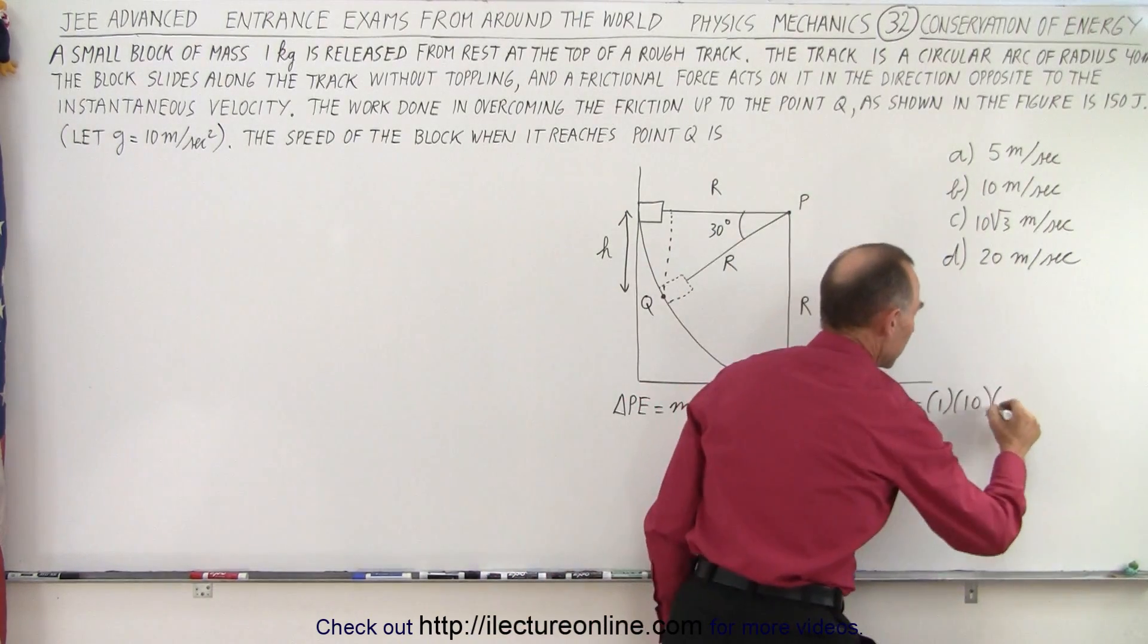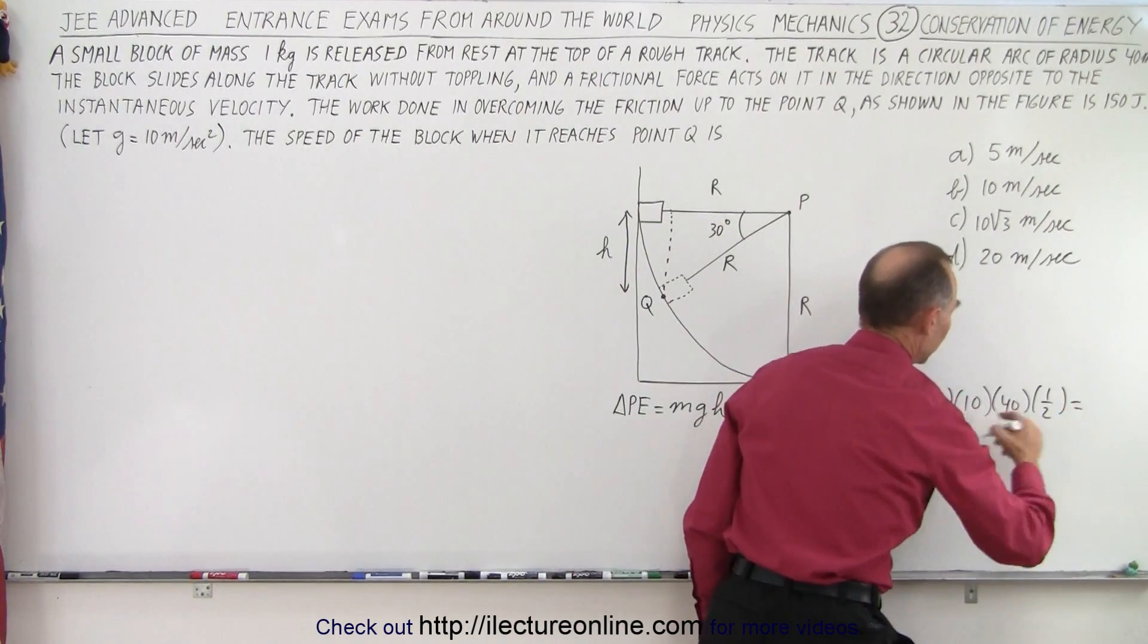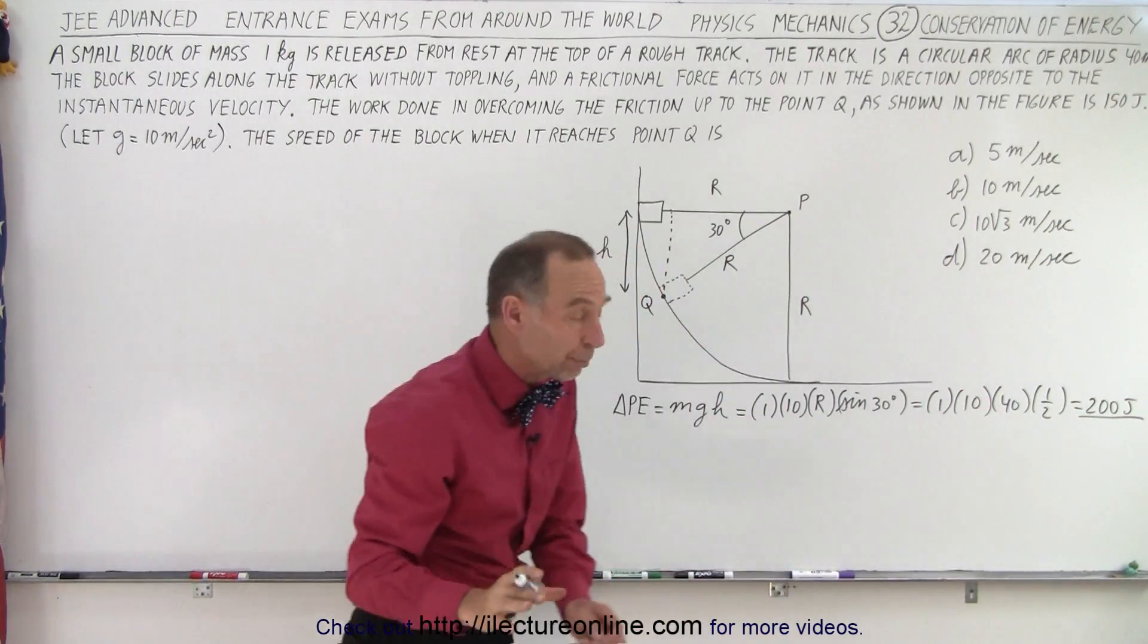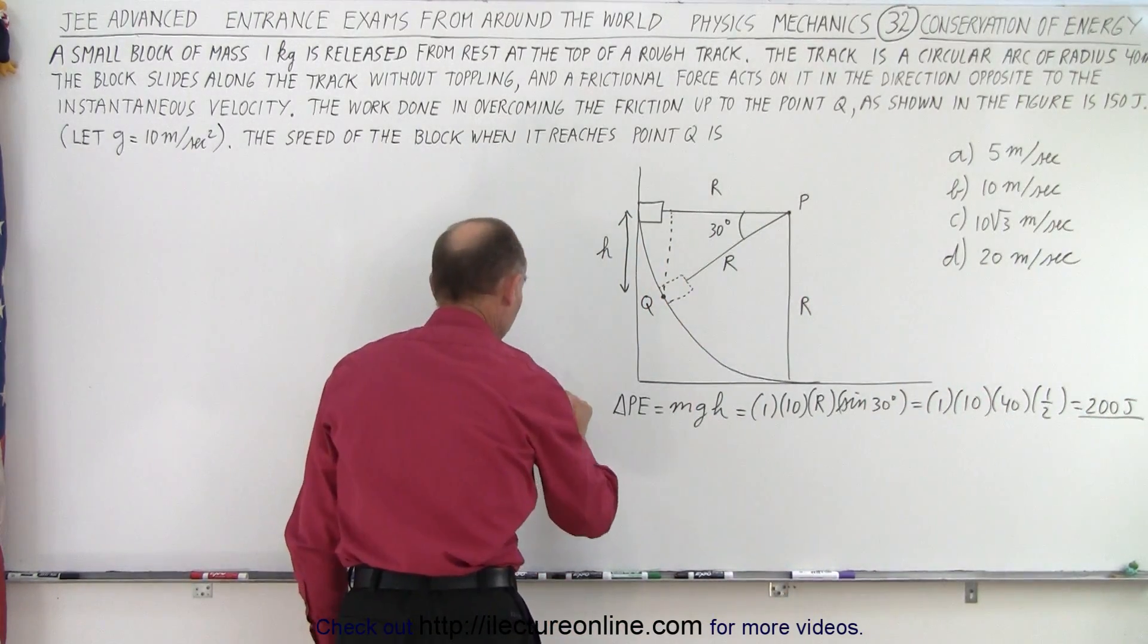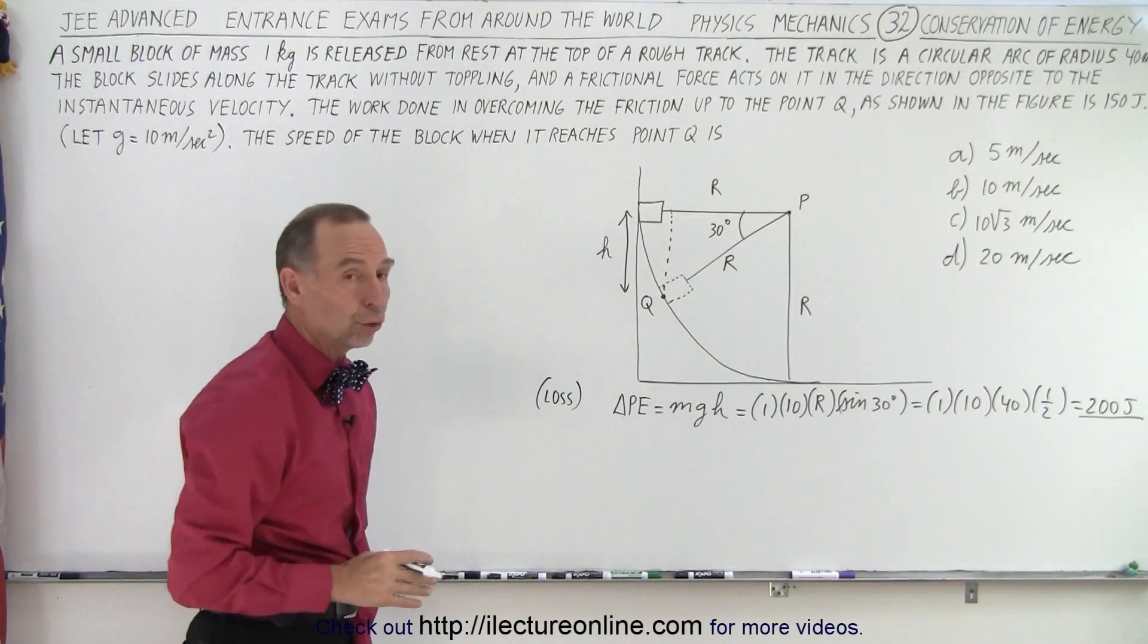R is 40, and the sine of 30 is one half. And so that's going to be equal to 200 joules. So the loss in potential energy is equal to 200 joules.